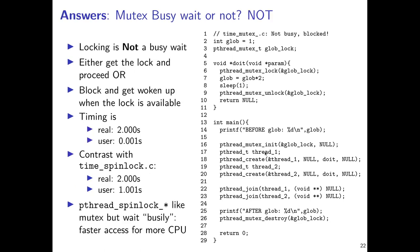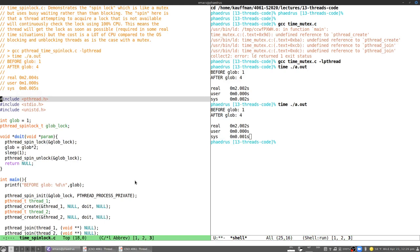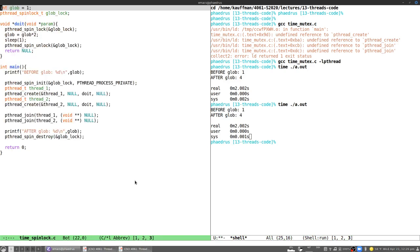This speaks to the efficiency of mutexes: like semaphores, they have an associated wait queue so that threads attempting to lock something unavailable get put on hold. Mutexes have very good operating system support and are generally efficient to use. They have a counterpart called a spin lock from the pthreads library — the true busy waiting scheme — where instead of calling pthread_mutex_lock, you use spin locks, as demonstrated in the time_spinlock.c program.